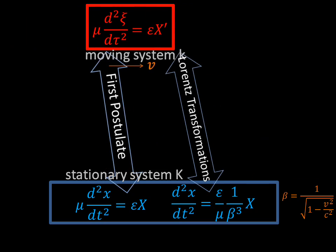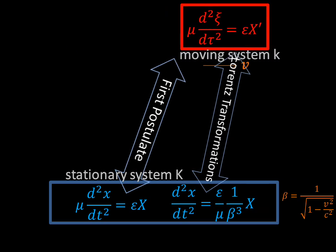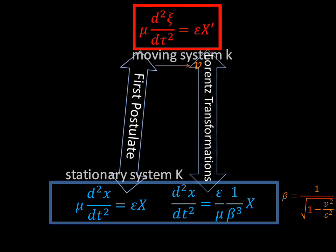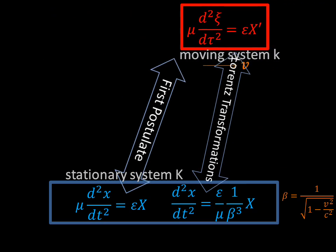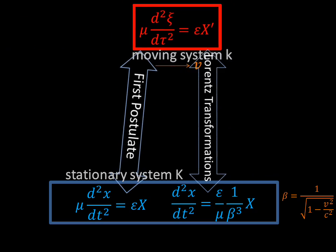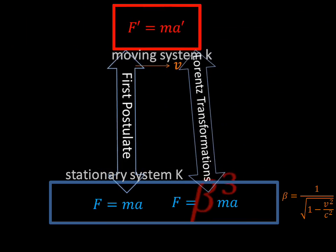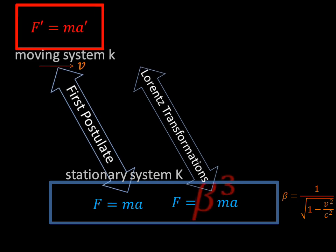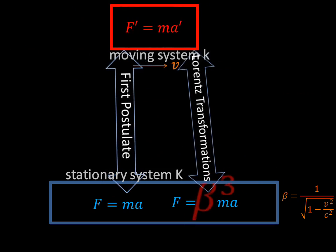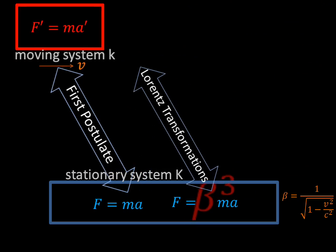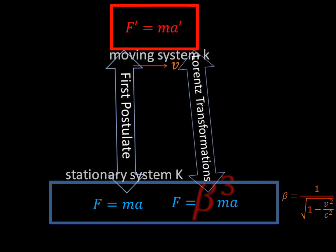The second derivative of distance x traveled by a body in a system over time is acceleration, while epsilon times capital X is the x-axis component of the force. Mass mu is usually denoted by m. Therefore, we can rewrite Newton's second law in its more commonly known form. The problem is seen at once: Einstein's so-called theory of relativity requires that one and the same body in one and the same system has, at the same time, both mass m and mass beta-cubed m.